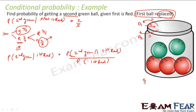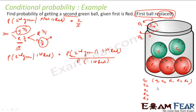Let's name the balls: g1, g2, r1, r2, r3. The first draw can be any of these five balls, and since the ball is put back, the second draw can also be any of g1, g2, r1, r2, r3. So if you make a pair of first and second, there are 5 × 5 = 25 such scenarios in the sample space.